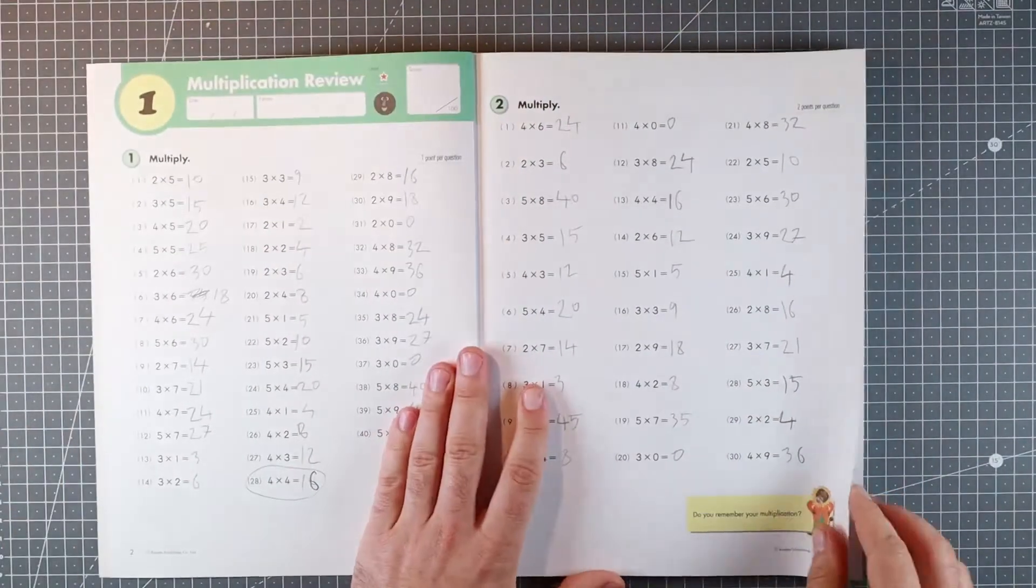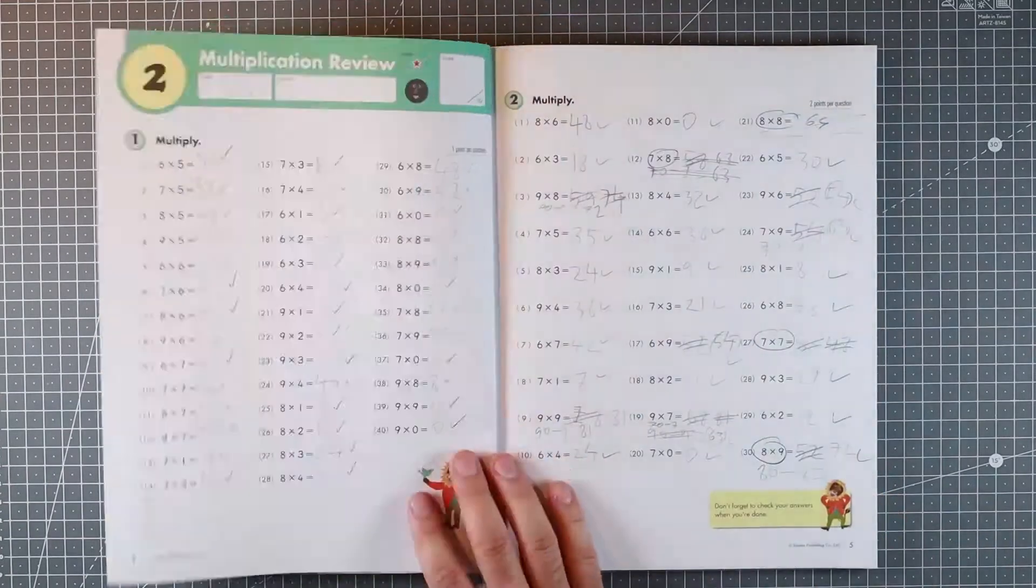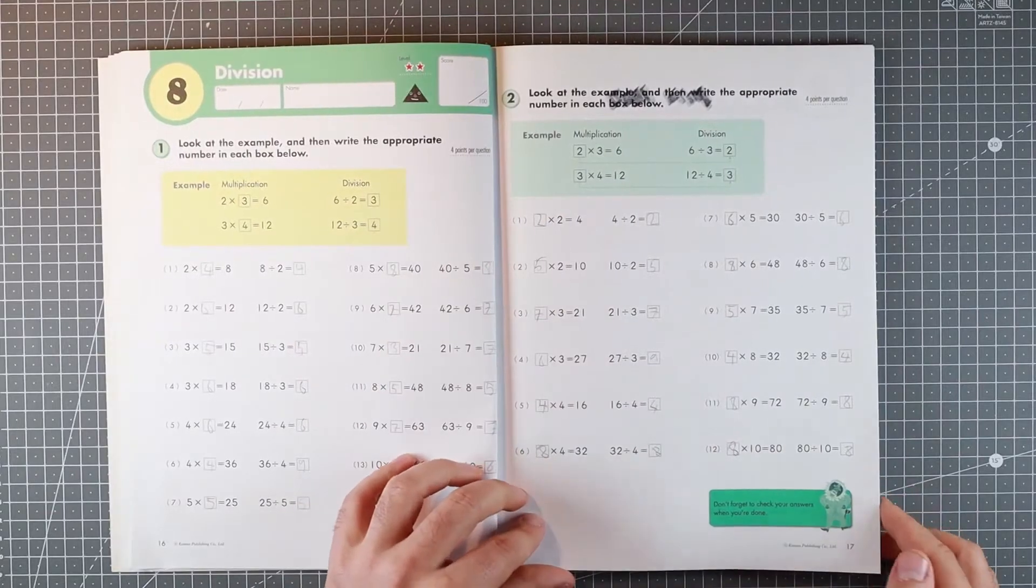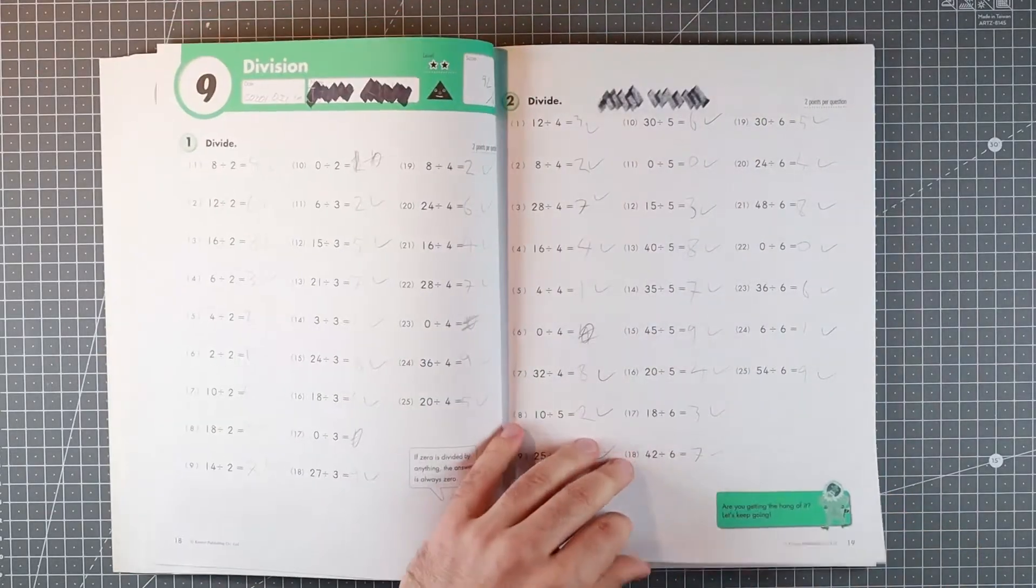What does it look like? Starts with simple multiplication for the first few pages, moves into very simple division. Again, all with nice instructions.